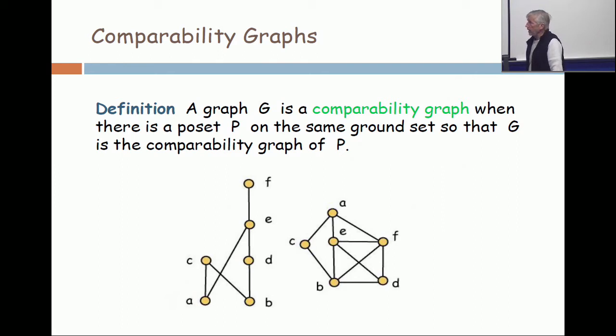Look at the cover graph, then look at the comparability graph. In the comparability graph, there's a clique of size four, because in the poset, there's a chain of size four. So, big difference between cover graphs and comparability graphs.